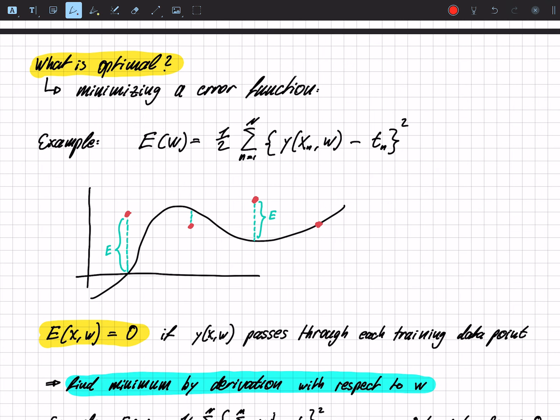The question is, what is optimal? So what are the right w's that we have to find? To solve this, we introduce an error function. And the error function just tells us how wrong we are with the selected w's.